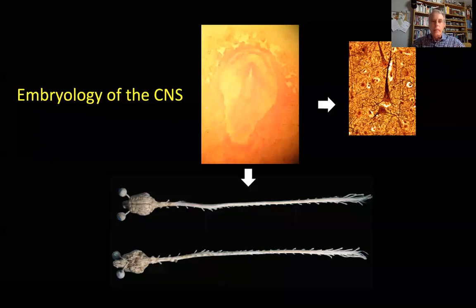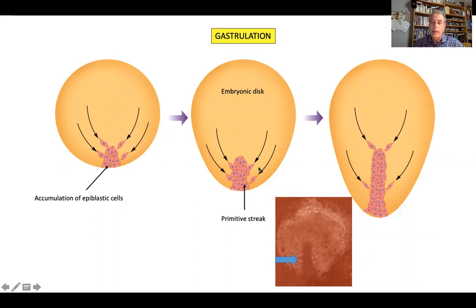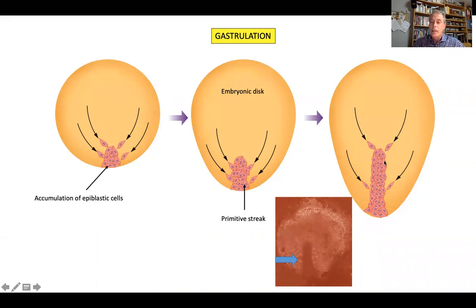The first topic is embryology of the central nervous system. Here you have drawings of an embryonic disc. First, the epiblastic cells migrate towards the caudal end of the embryonic disc. As more epiblastic cells migrate, they accumulate on the back of the embryonic disc. Here you have a chick embryo, and this accumulation of epiblastic cells forms what is known as the primitive streak. As more cells accumulate, the primitive streak gets longer.